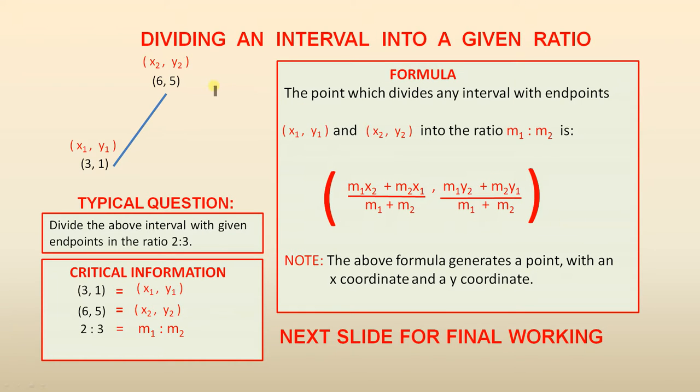So I've reproduced the interval here. The information is all the same. Now here is the typical question that we can get. It will be worded something like this: Divide the above interval with given endpoints in the ratio 2 is to 3.